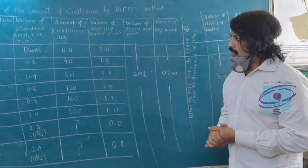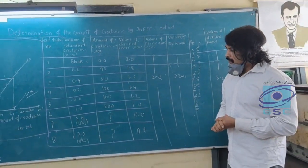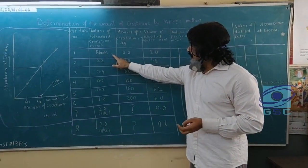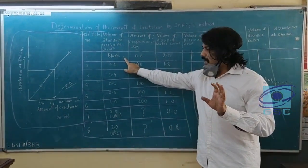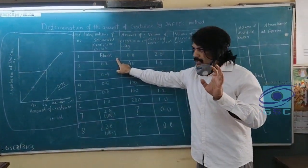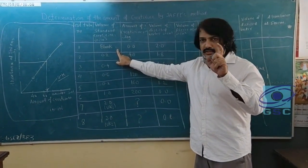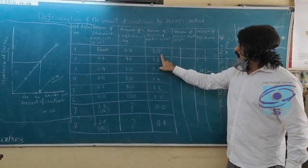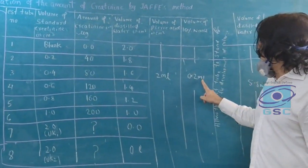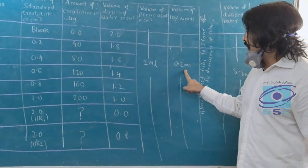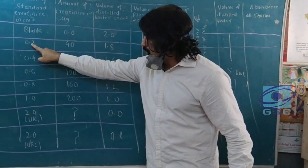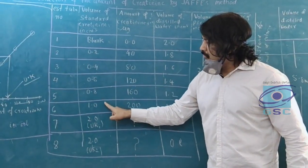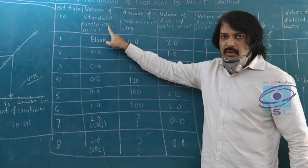Let me explain the procedure involved in this method briefly. We require eight test tubes. Test tube number one is blank — blank means there is no creatinine. You add 2 ml of water, 2 ml of picric acid, and 0.2 ml of 10% NaOH to test tube number one. Test tubes two to six contain the standard creatinine solution — a fixed amount of creatinine. The standard solution at 1 ml contains 200 micrograms per ml.